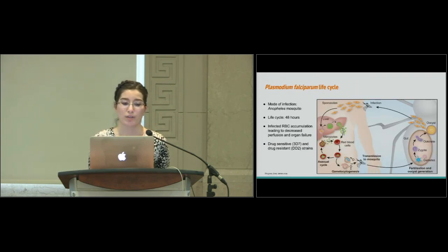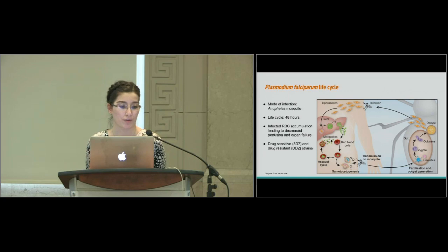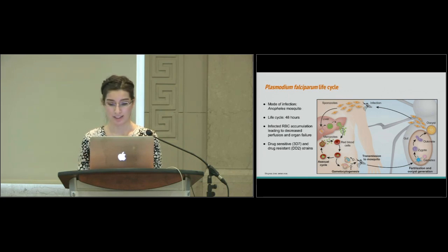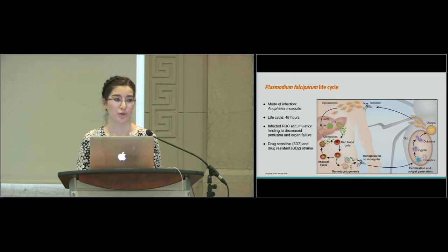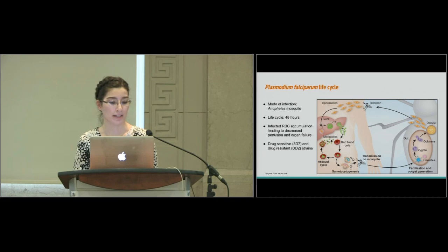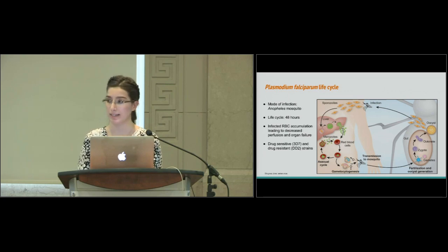Arguably, the most deadly strain is Plasmodium falciparum. It is the one that leads to the most complications. If untreated, it will lead to death, and it's the most common in Sub-Saharan Africa. The mode of infection is by saliva of the Anopheles mosquito, and once it enters the body, it will first attack the liver, where it matures into forms that can go on and attack its main target, which is the red blood cell.